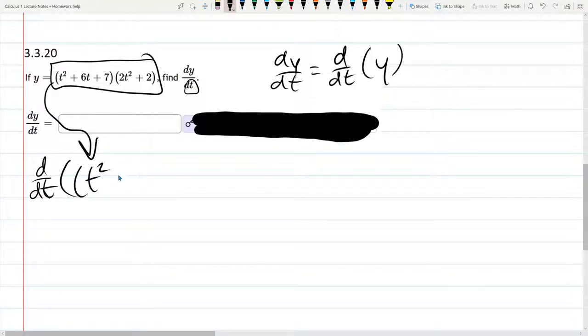t squared plus 6t plus 7. I notice my t's look a little too much like my plus. You need to be careful. Times 2t squared plus 2.